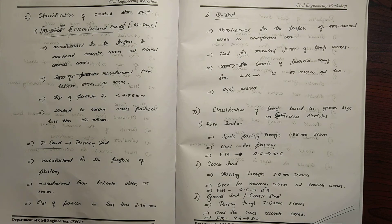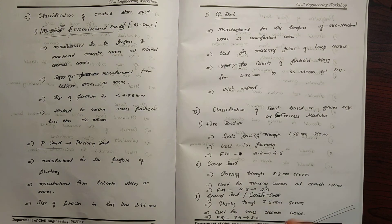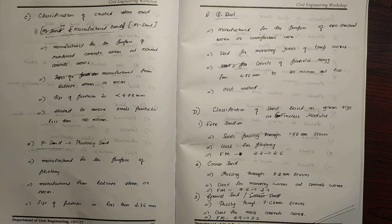The classification of sand is based on grain size, using fineness modulus. There is fine sand, coarse sand, and gravel sand. Fine sand passes through 1.58mm sieves and is used for plastering.